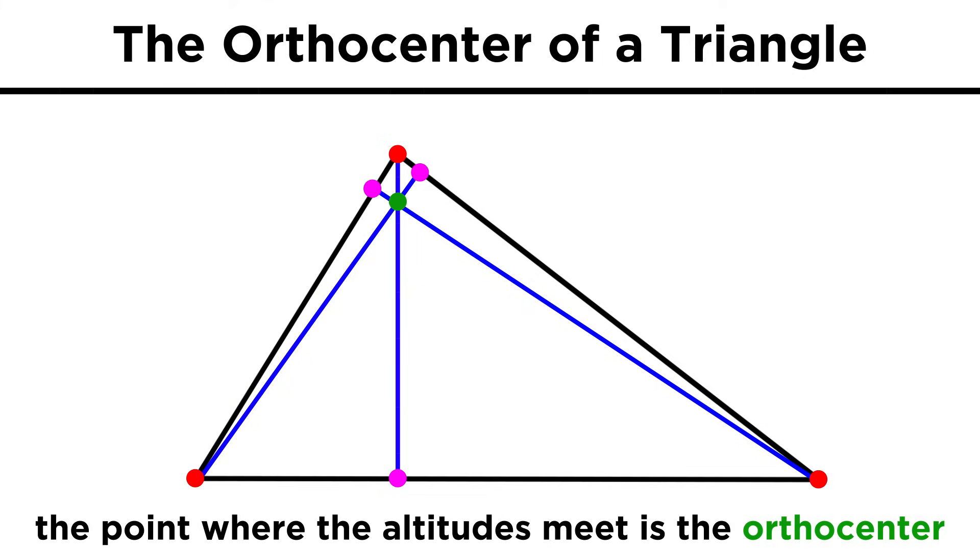Each triangle has three altitudes, one per vertex, and the place where these altitudes converge is called the orthocenter of the triangle.